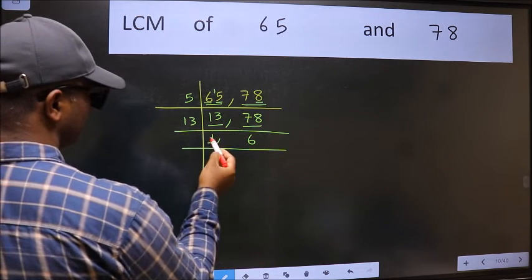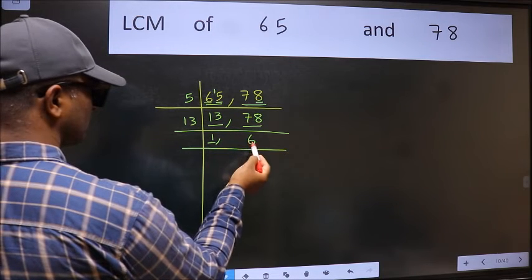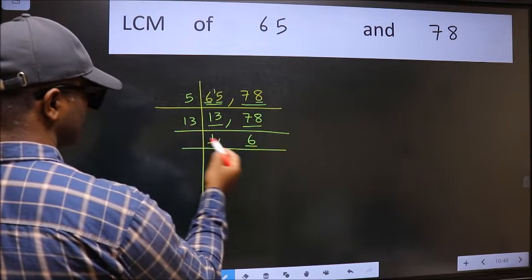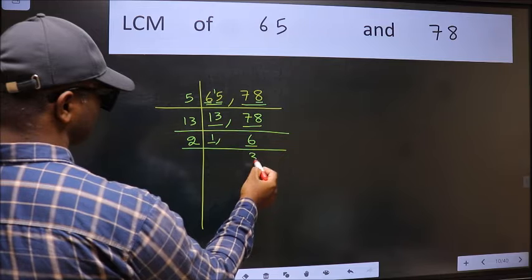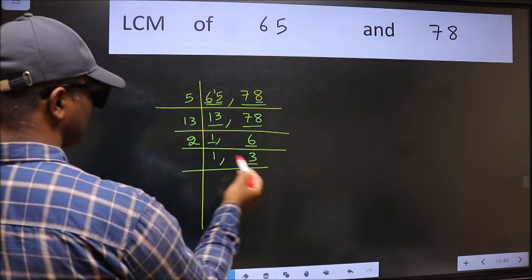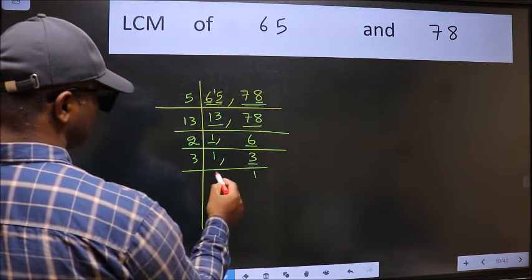Now we got 1 here, so focus on the next number 6. 6 is 2 times 3 is 6. Now here we have 3. 3 is a prime number, so 3 once 3.